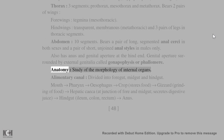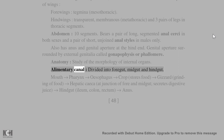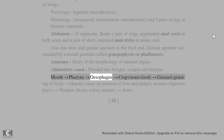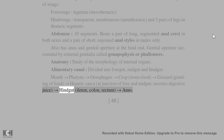Anatomy is the study of the morphology of internal organs. The alimentary canal is divided into foregut, midgut, and hindgut. Foregut includes mouth, pharynx, esophagus, crop (stores food), and gizzard (grinding of food). Hepatic caeca at the junction of fore and midgut secrete digestive juice. The hindgut consists of ileum, colon, rectum, and anus.